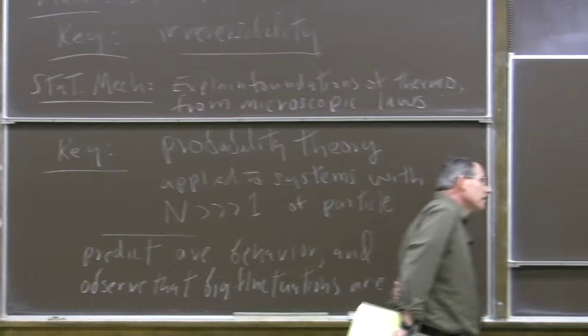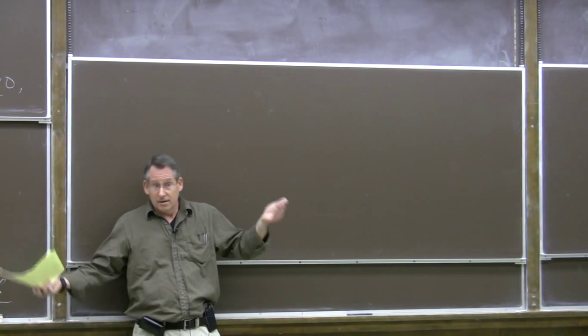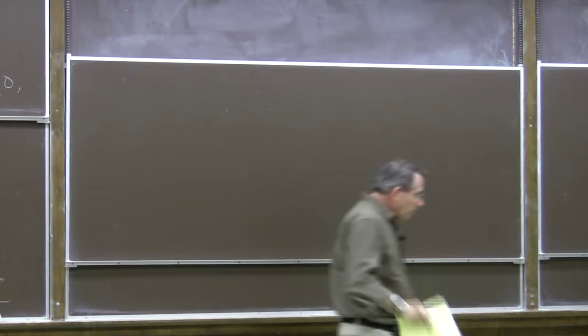Notice that here probability enters in a rather different way than in the study of quantum mechanics from Physics 12b. In quantum systems, probability is intrinsic — even when you have the most complete possible description of a system, you're unable to predict, except by assigning probabilities, the outcome of measurement. You couldn't possibly know more about the system, and still you can't predict what will happen when you measure it.